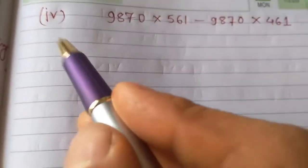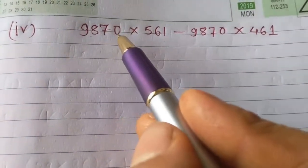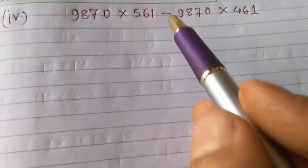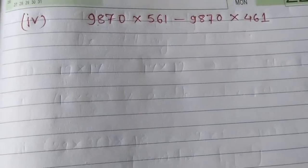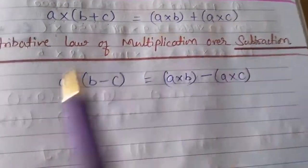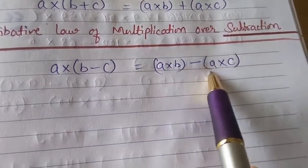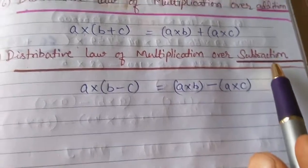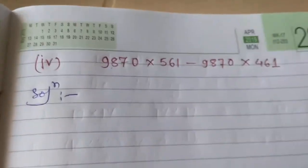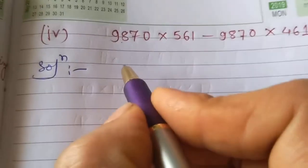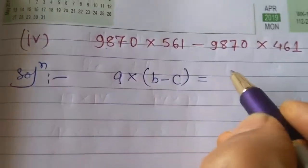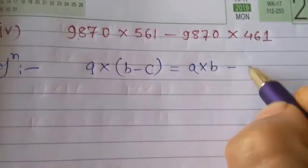Now question number 4 of part 3: 9,870 × 561 − 9,870 × 461. Here you see a minus sign, and the rule that applies is the Distributive Law of Multiplication over Subtraction: A × (B − C) = A × B − A × C.